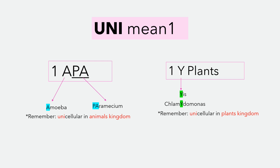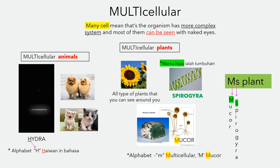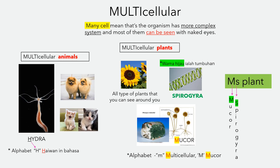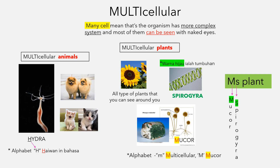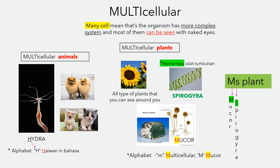Multicellular means many cells. Many cells mean that the organism has a more complex system, and most of them can be seen with the naked eye. Multicellular animals are animals you can see around you, like a dog and a cat. A smaller one that cannot be seen with the naked eye is hydra.